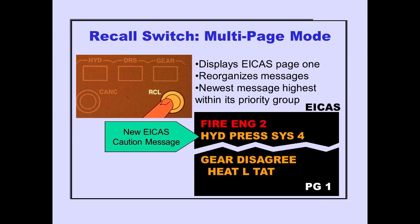In this example, the new ICAST caution message, hydraulic pressure system four, that was displayed on page two is now displayed on page one at the top of the caution group.